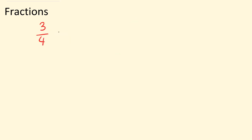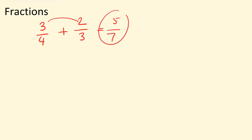Three quarters — we are adding two thirds to this fraction. Now as we can see, the denominators are different: one has a four as a denominator, one has a three as a denominator. Now a mistake students make is they will say three and two is five, four and three is seven, so five over seven. No, we do not do this.